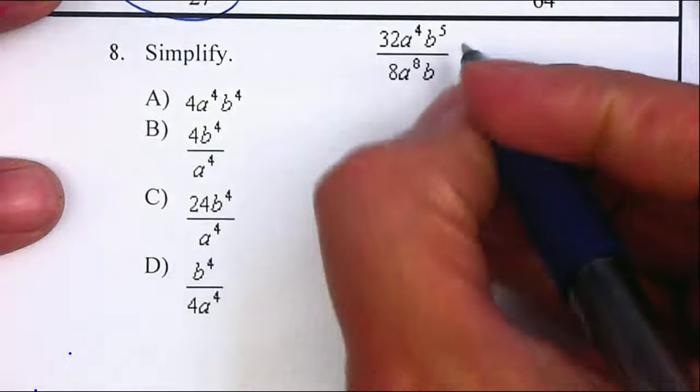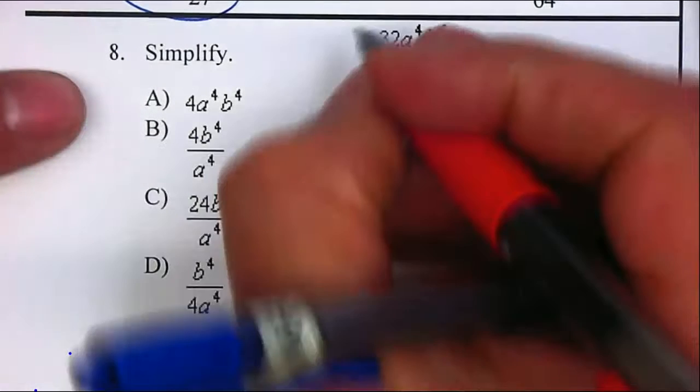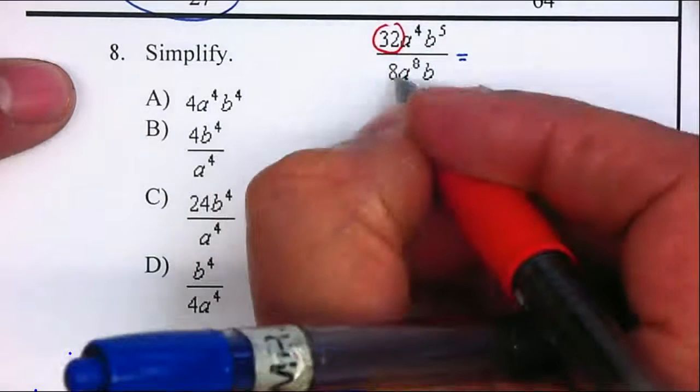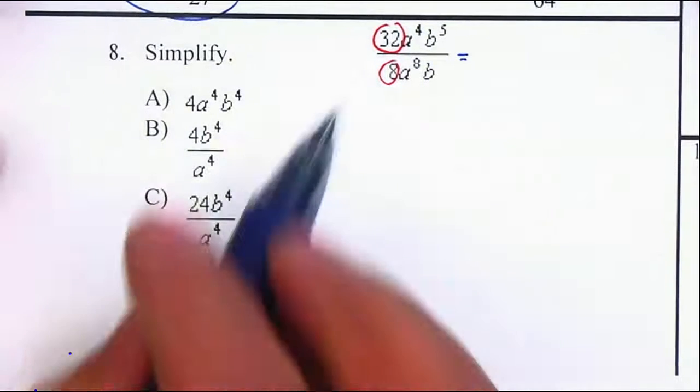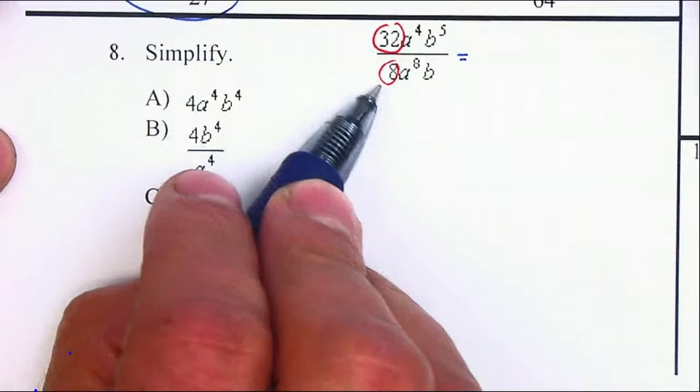First, we're going to reduce our fraction. We're going to reduce the 32 and the 8. What's the biggest number that divides 32 and also divides 8?